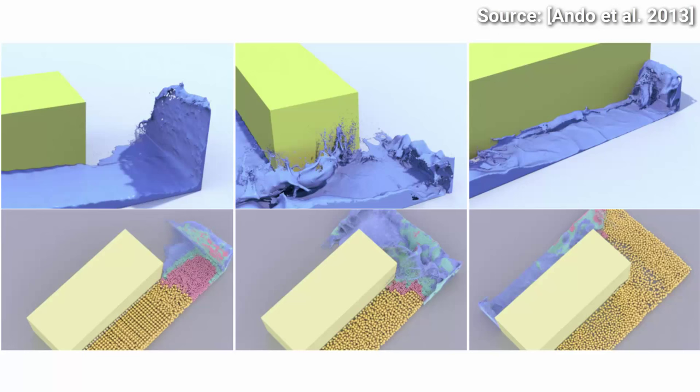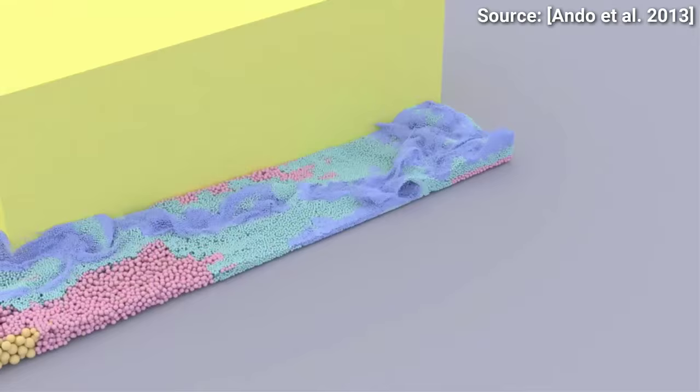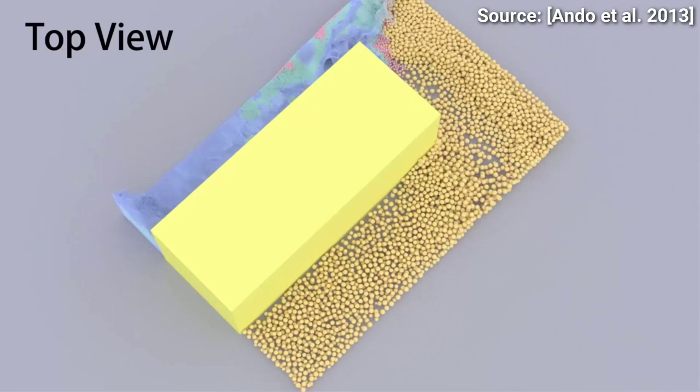It also takes into consideration which regions we are currently looking at. Here we are watching one side of the corridor, where the simulator will take this into consideration and create a highly detailed simulation, at the cost of sacrificing details on the other side of the corridor.